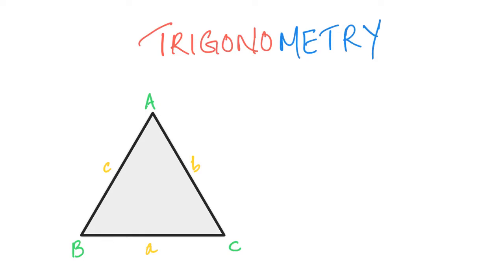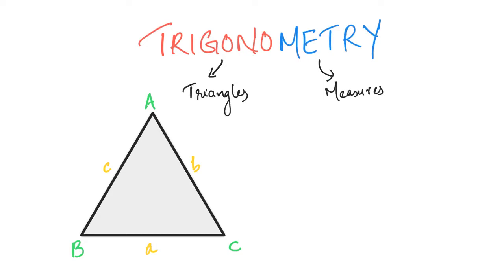So what is Trigonometry basically? We are going to learn the name. Trigono means it is about triangles. Metry means it is about measures. So, triangles and measures — that is Trigonometry.